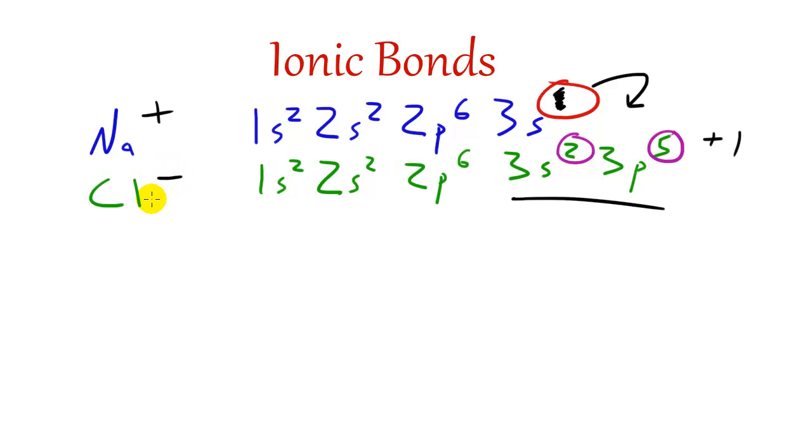So after the transfer of electrons, chlorine is now negatively charged, and sodium is now positively charged. Since this is a positively charged ion and this is a negatively charged ion, positives and negatives are going to attract each other into that ionic bond, which we see right there.